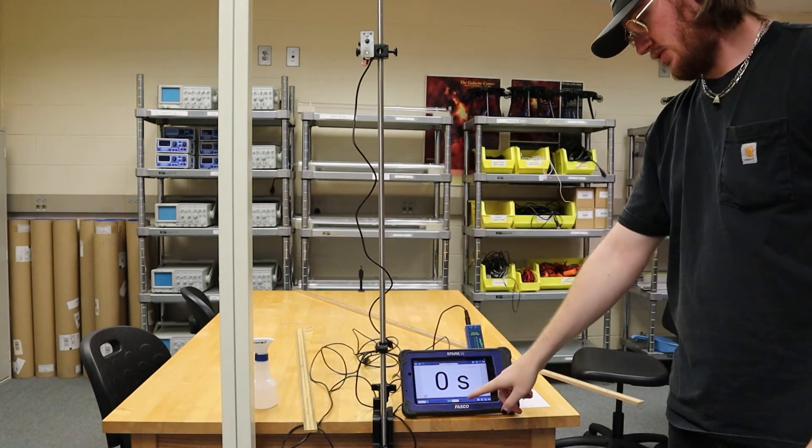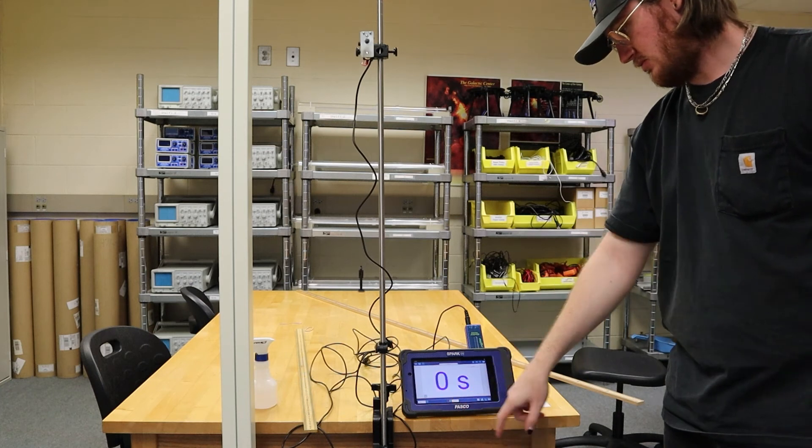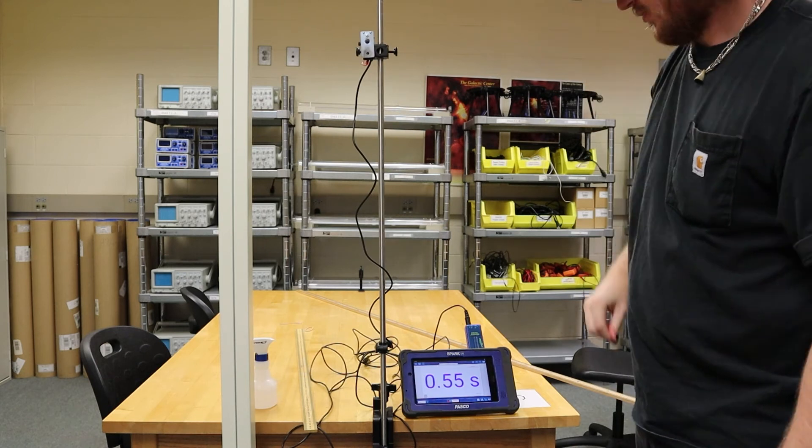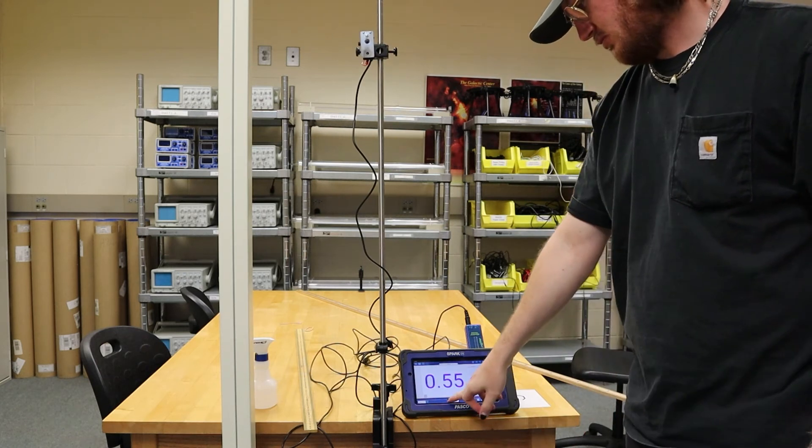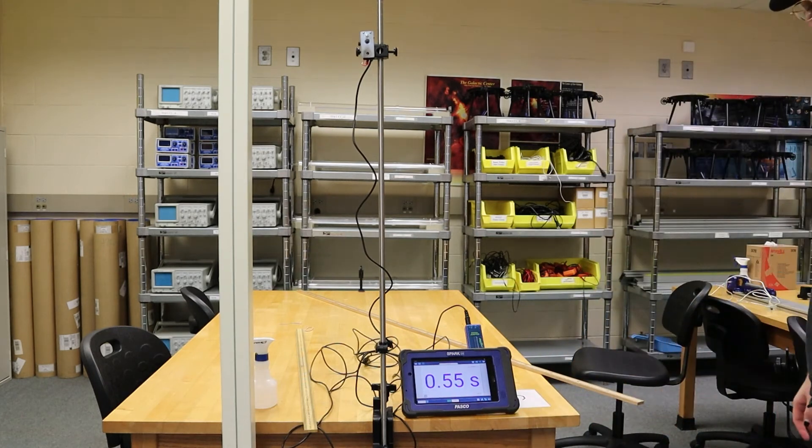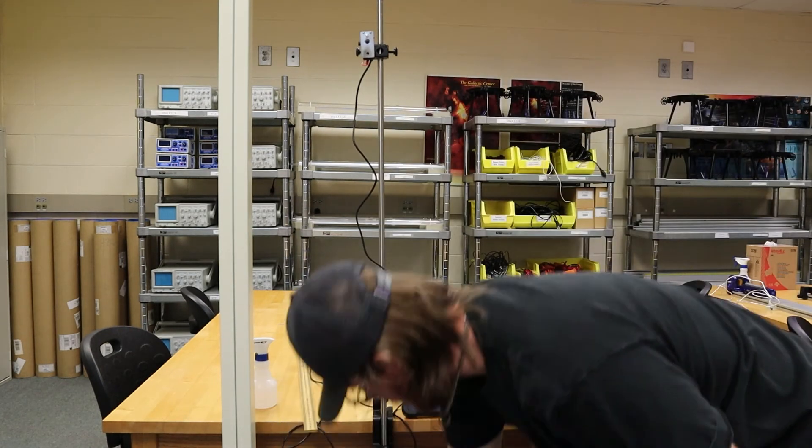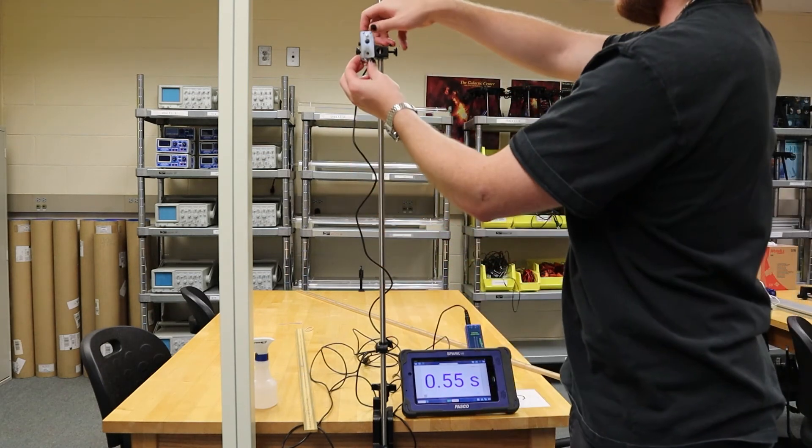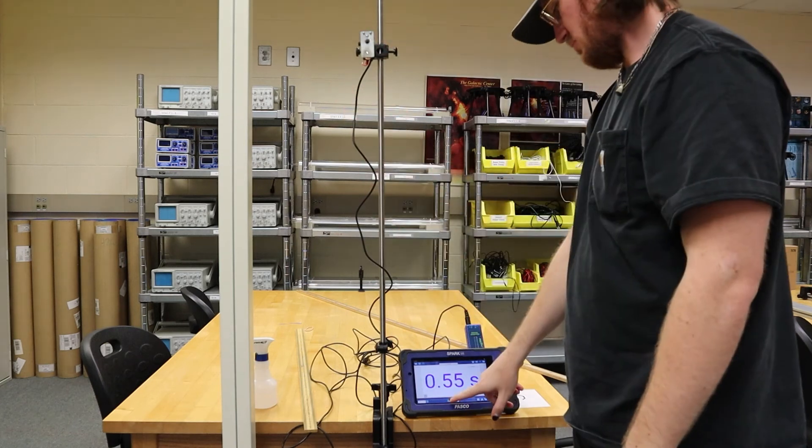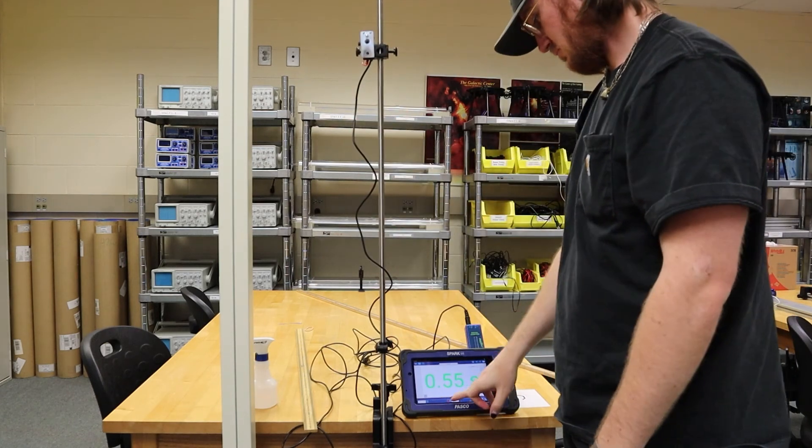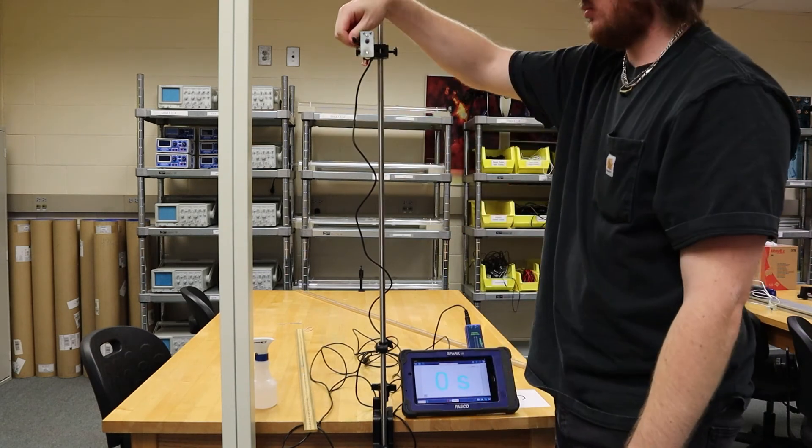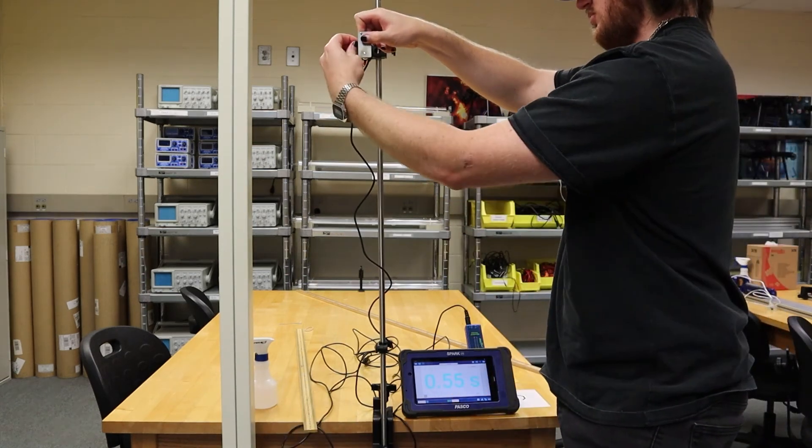Once the ball is secured in the holder, press start on the LXI and then release the ball. Once the ball makes contact, the time should appear and you'll press stop on the LXI. After recording the data, reset the experiment, press start on the LXI again, and collect more data. Repeat this process until you have the required number of data points.